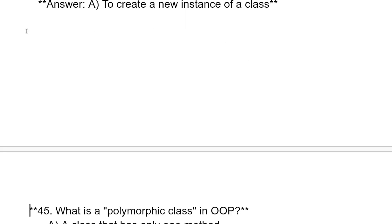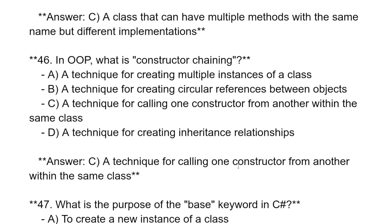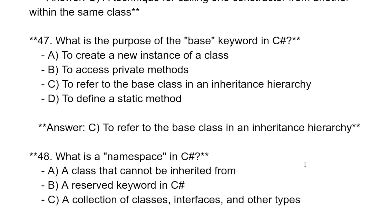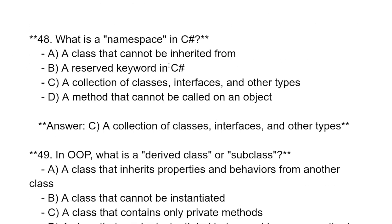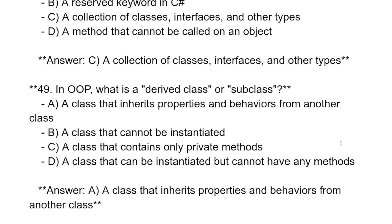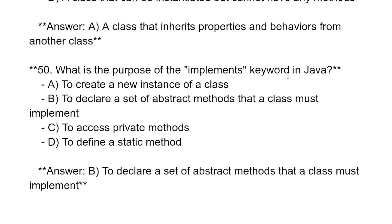What is a polymorphic class in C++? A class that can have multiple methods with the same name but different implementations. What is constructor chaining? A technique for calling one constructor from another within the same class. What is the purpose of the base keyword in C#? To refer to the base class in an inheritance hierarchy. What is a namespace in C#? A collection of classes, interfaces, and other types. What is a derived class or subclass? A class that inherits the properties and behavior from another class. What is the purpose of the implements keyword in Java? To declare the set of abstract methods that a class must implement.